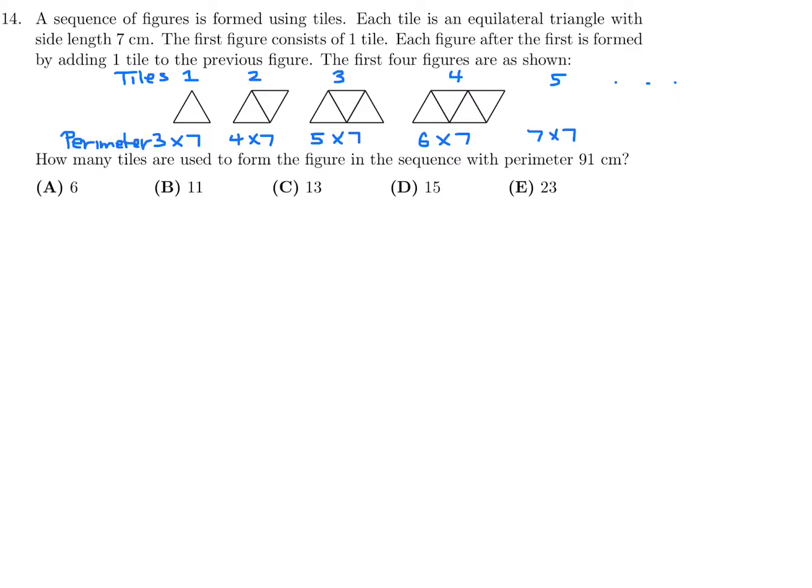Now we want to get to a perimeter of 91. 91 will be something times seven. If you divide 91 by seven, you get that is 13. So this is a 13 by seven perimeter. The number of tiles, if you notice, there is a relationship between the number of tiles and how many times you had to multiply seven. The number of tiles is always two less. So if this is 13, the number of tiles would be 11. So just be careful there. Number 14, the answer is B.